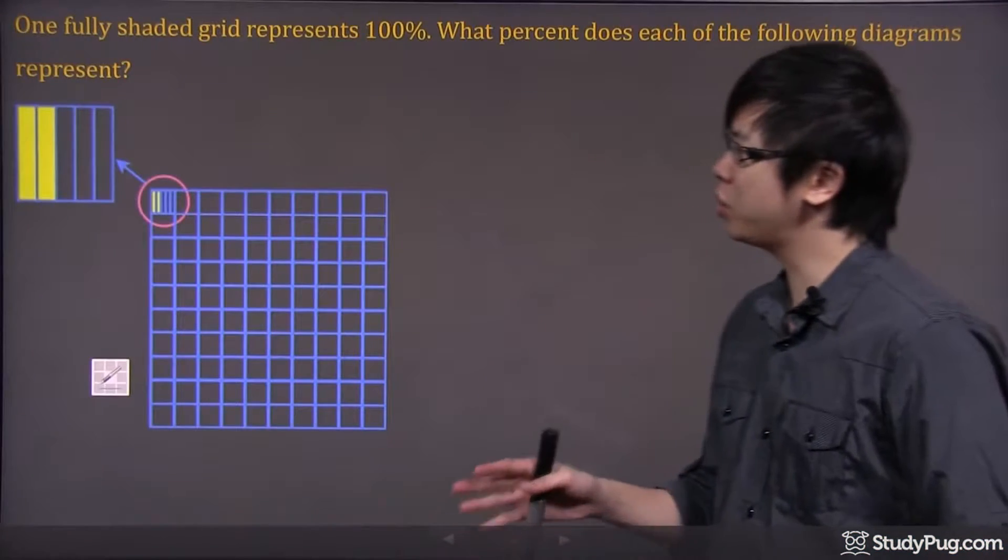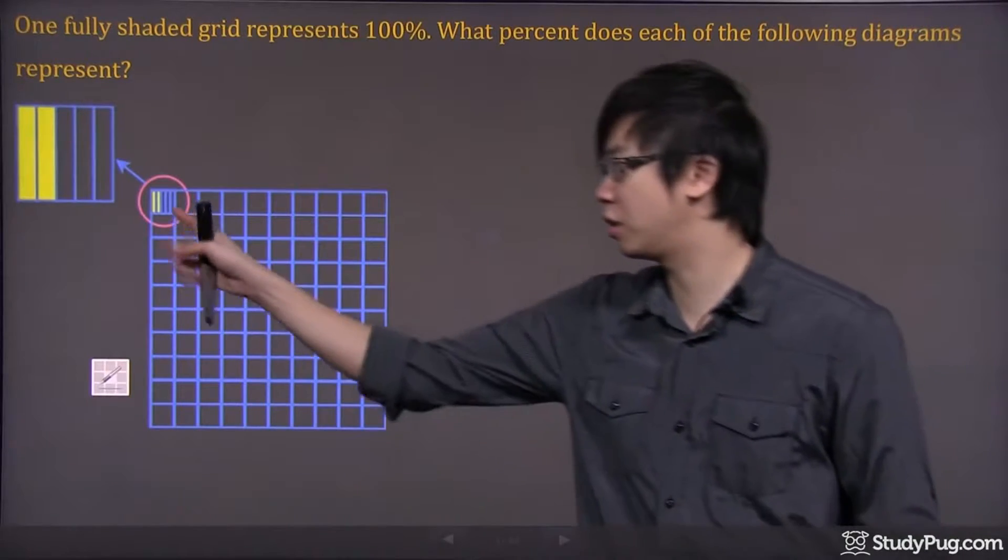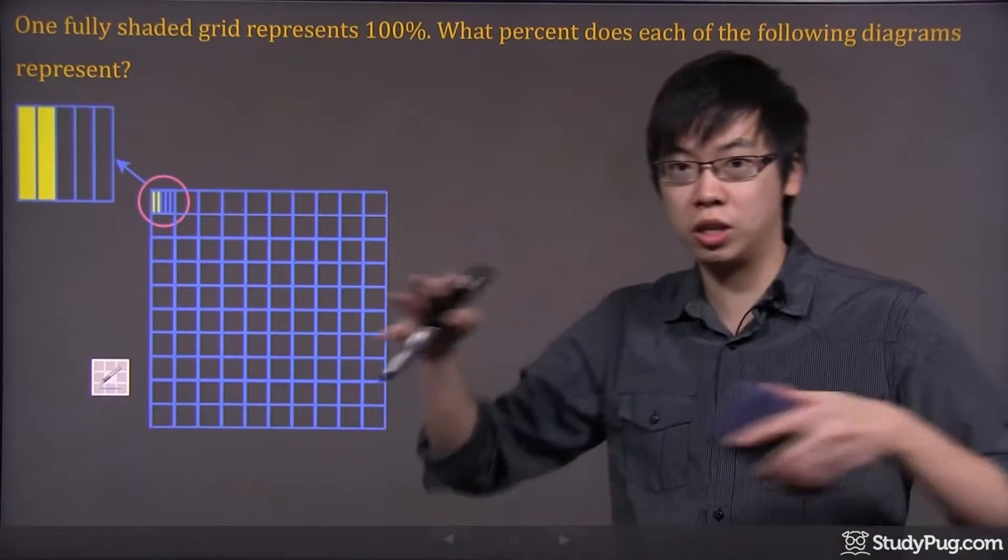Hi, welcome to this question right here. We're trying to figure out the percentage of what you see here, the yellow stripes, versus the entire grid.